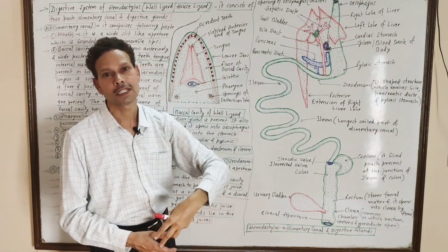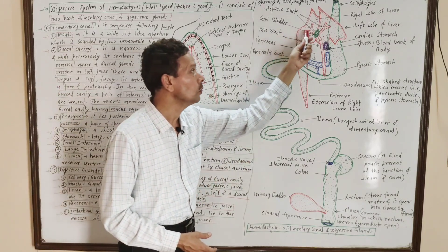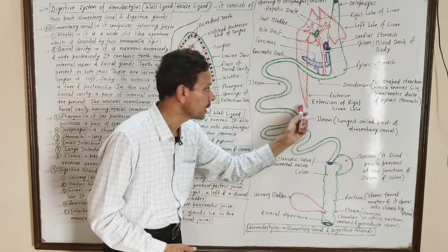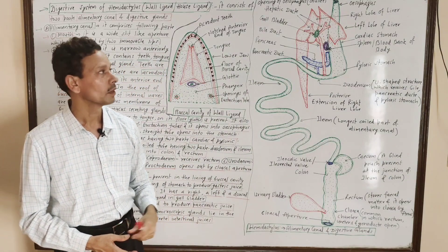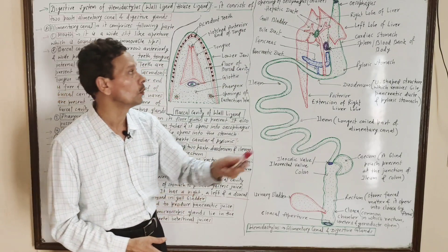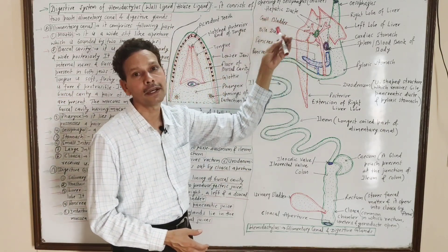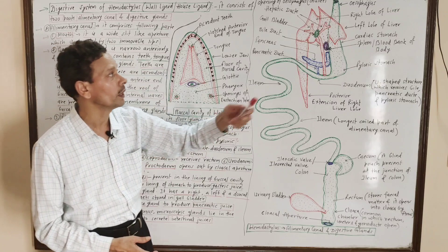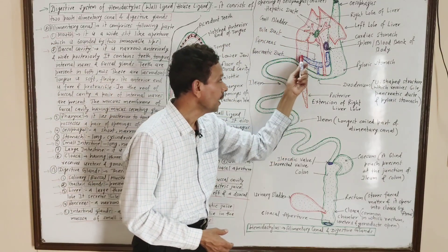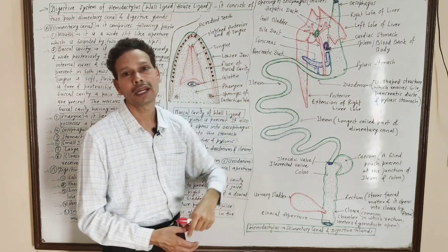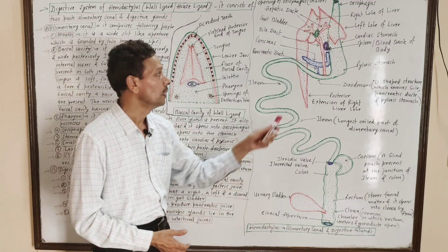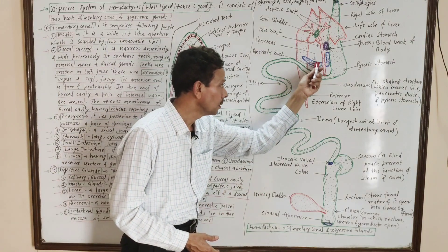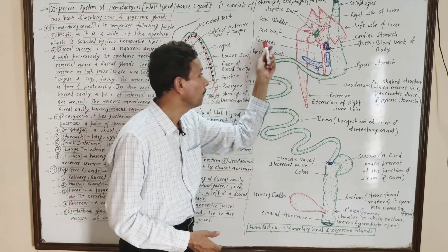The liver has three lobes: a very small dorsal lobe, a left lobe, and a right lobe. The elongated structure which is an extension of the right liver lobe is the gallbladder, where the liver secretion — bile — gets stored. The pancreas is a tubular, band-like structure that secretes pancreatic juice, which comes into the duodenum through the pancreatic duct.